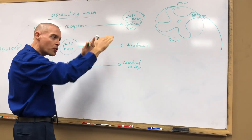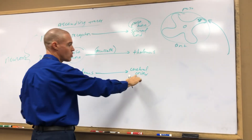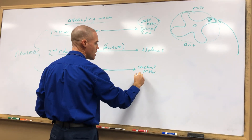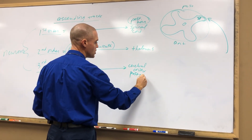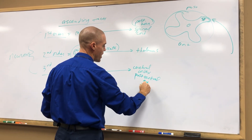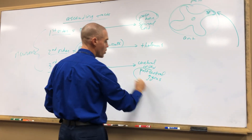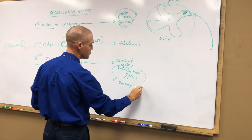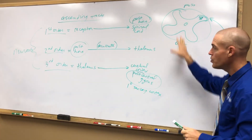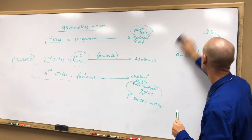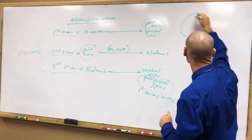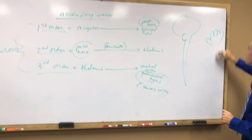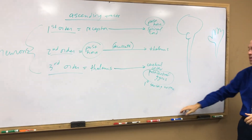From the thalamus, our third order neuron is going to take over and go to the cerebral cortex — which is the outer part of the brain. We're going to be really specific: the area of the cortex this goes to is the post-central gyrus, which is considered our primary sensory cortex. We'll talk about this more tomorrow.